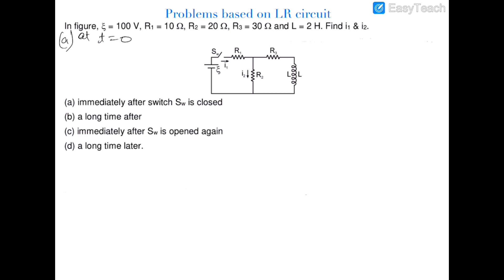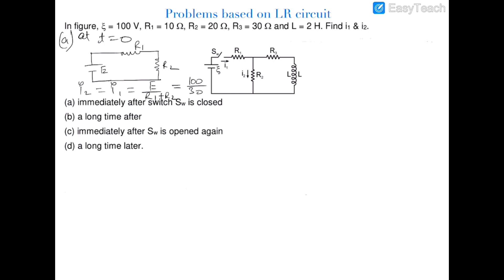At t = 0, the inductor offers infinite resistance and will not allow current to flow through it. So current only flows through the R2 branch. Therefore i2 = i1 = E/(R1+R2). With E = 100 and R1+R2 = 30, the answer for both i1 and i2 is 10/3 ampere.